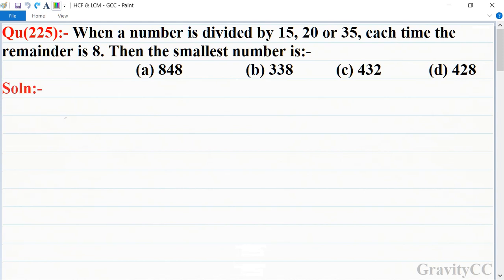Quantitative Aptitude, Chapter HCF and LCM, Question 225: When a number is divided by 15, 20, or 35, each time the remainder is 8. Then the smallest number is... In this question, find the smallest number that when divided by 15, 20, and 35 gives remainder 8 in each case.